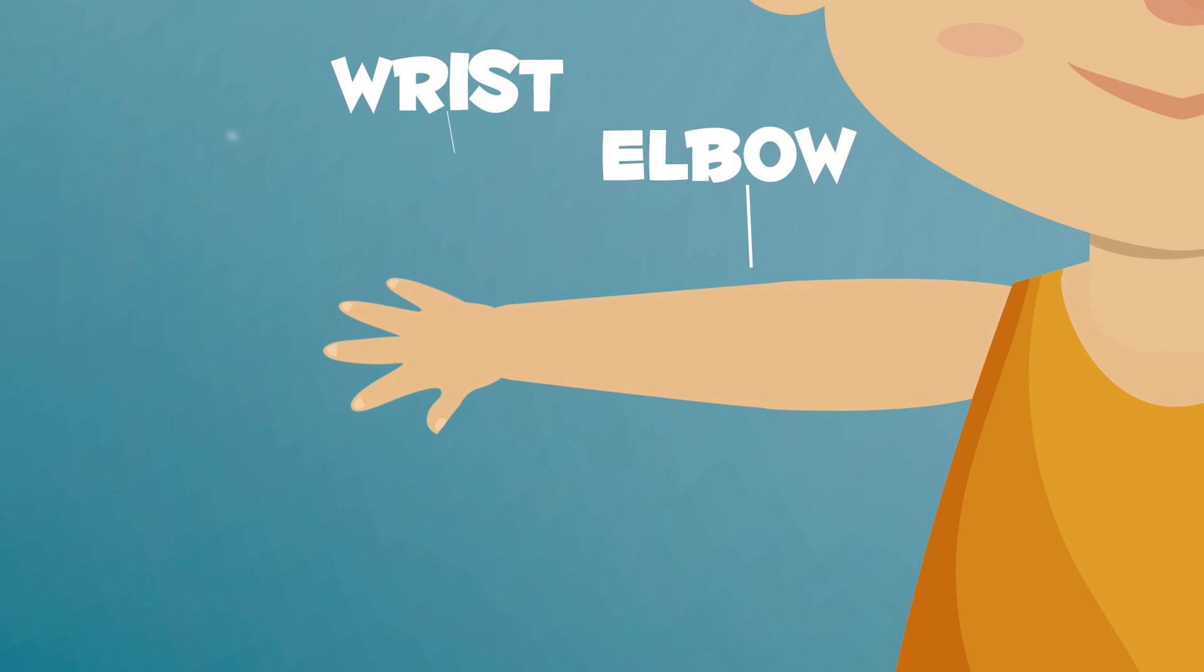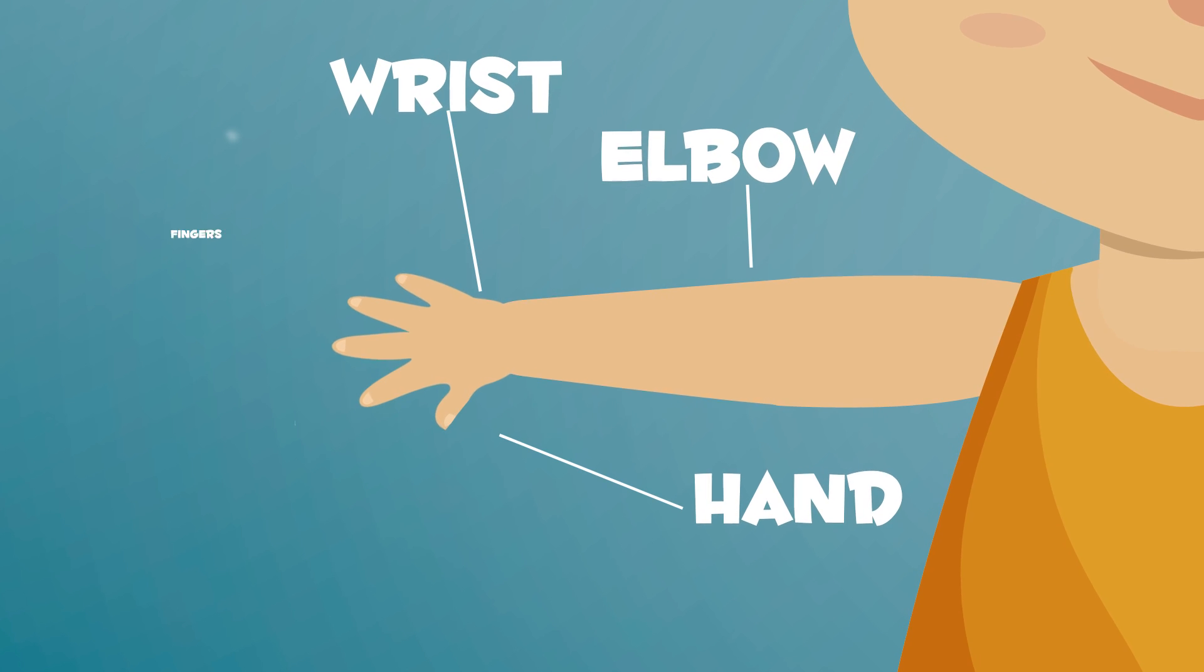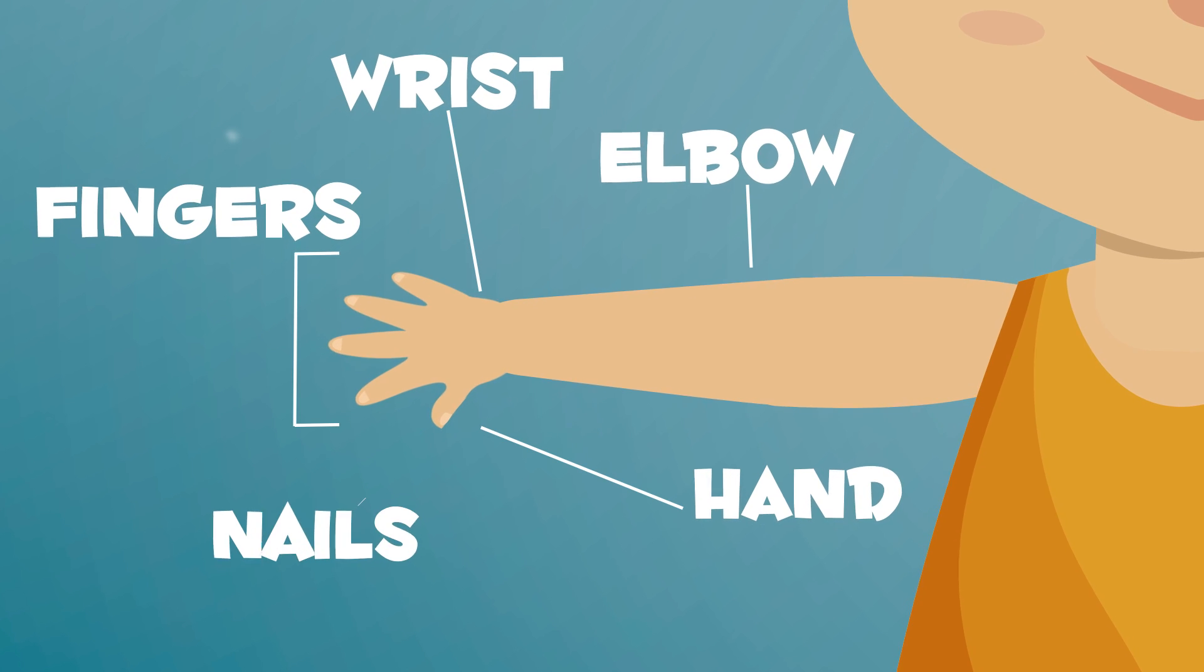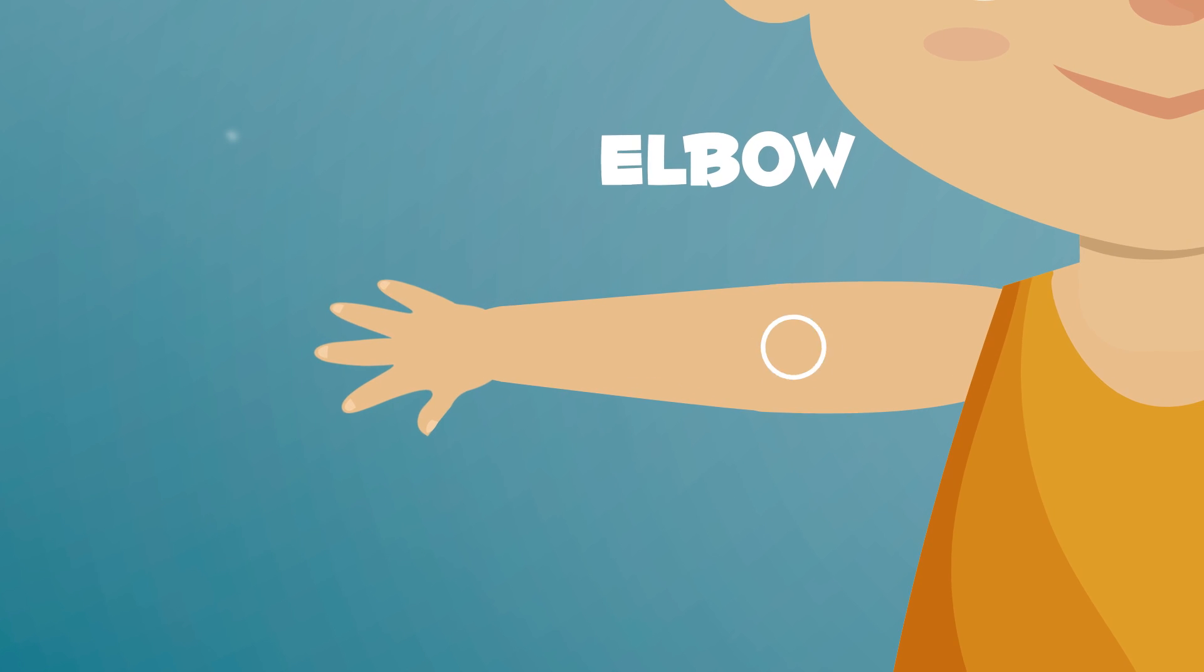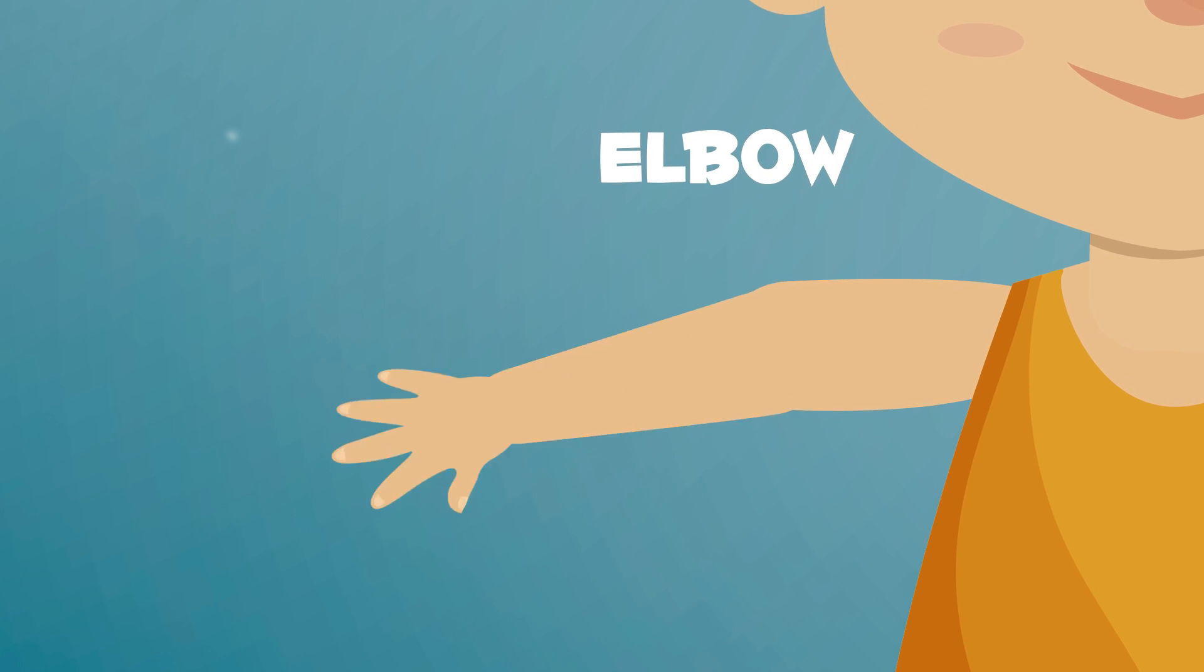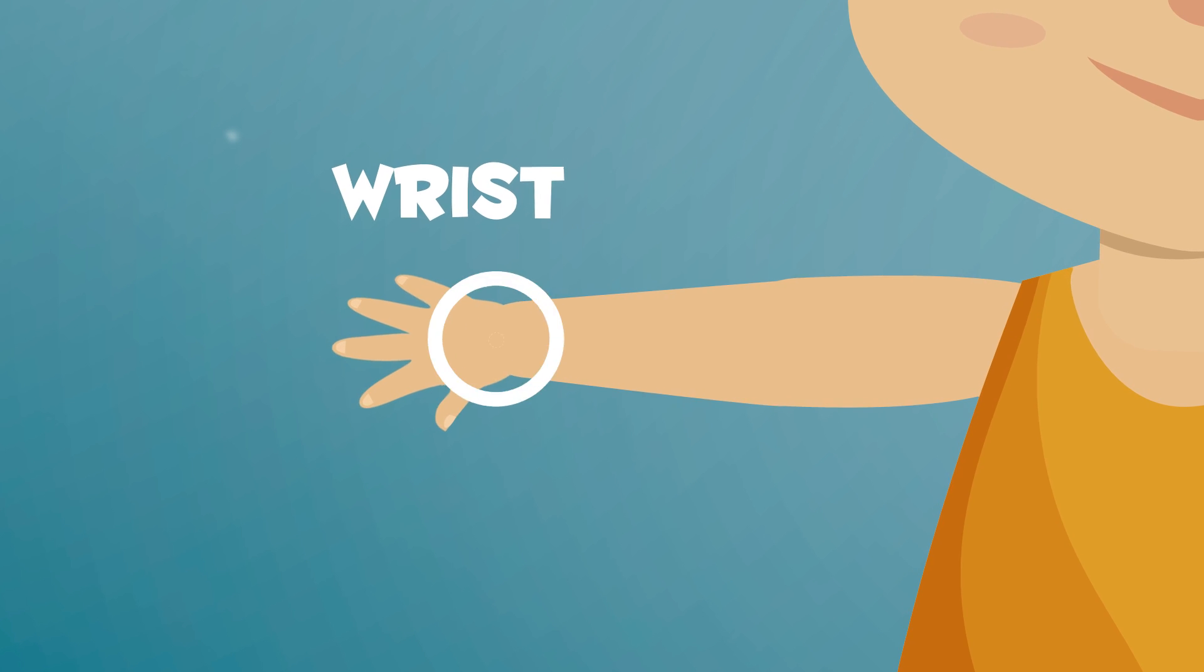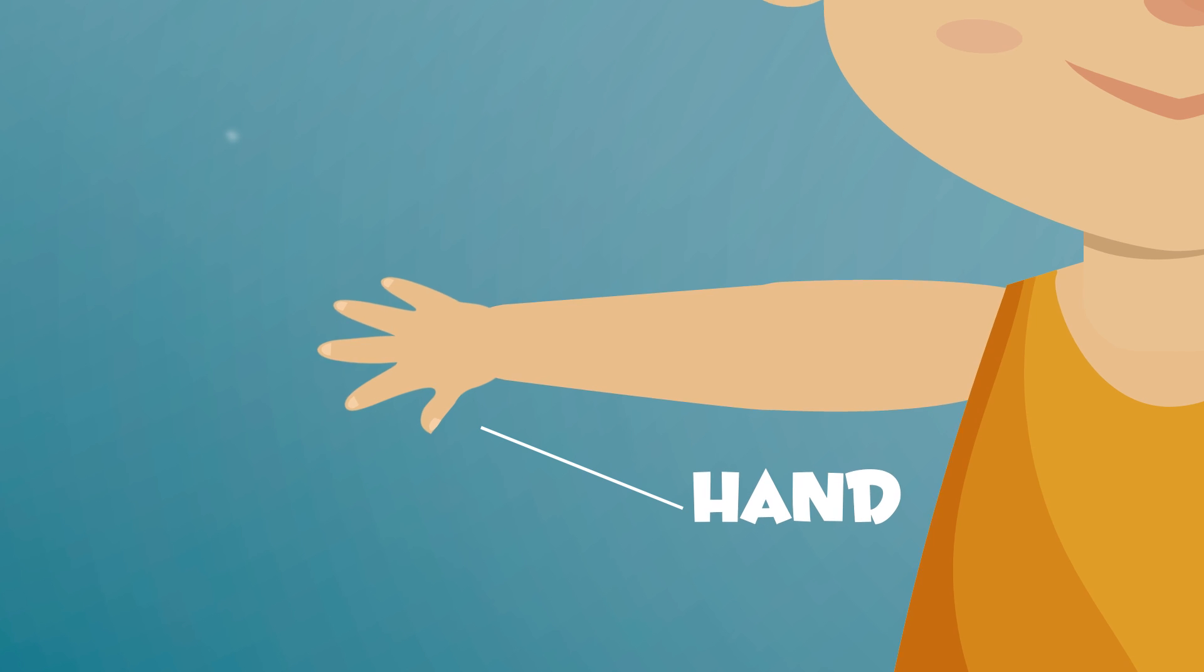Your elbow is a joint. You can bend your arm with it. Your wrist is a joint that connects your hand and arm. On your hand you have the palm of your hand and your fingers.